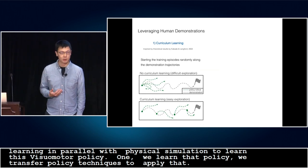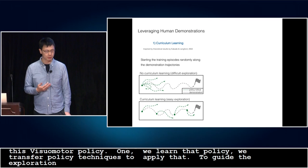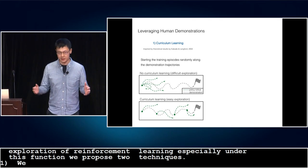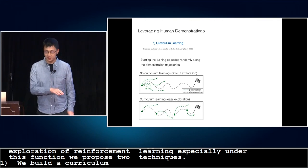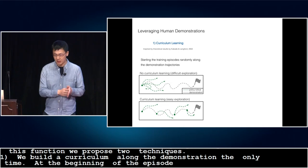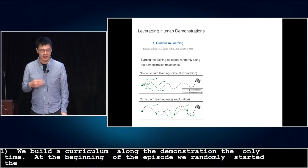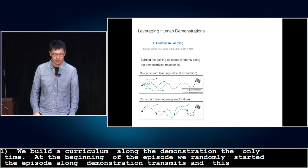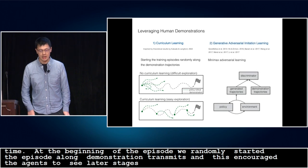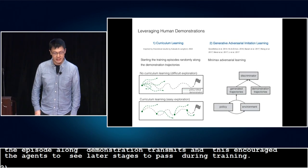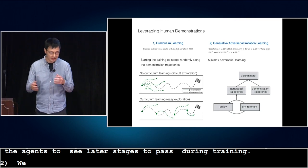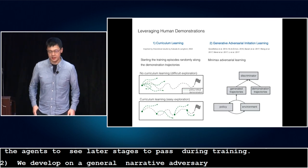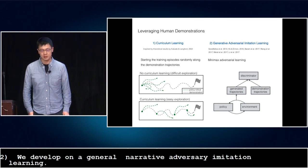To guide the exploration of reinforcement learning, especially under sparse reward functions, we propose two new techniques. First, we build a curriculum along the demonstration trajectory: at the beginning of each training episode, we randomly start the episode somewhere along the demonstration trajectories. This encourages the agent to see later stages of the task earlier during training. Second, we develop a variant of generative adversarial imitation learning, which adopts a GAN-like minimax learning objective that encourages the policy to generate trajectories as close to the demonstration trajectory as possible.